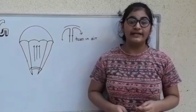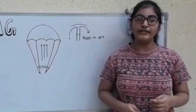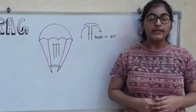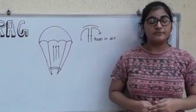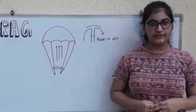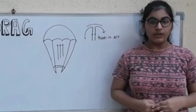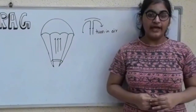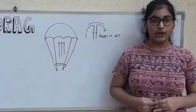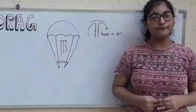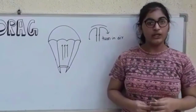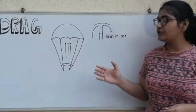Drag is a force acting opposite to the relative motion of any object with respect to the surrounding fluid. This can exist between two fluid layers or a fluid and a solid surface. If you are wondering why we refer to air as a fluid, it is because air is also considered a fluid in physics. An example of drag being used is a parachute.